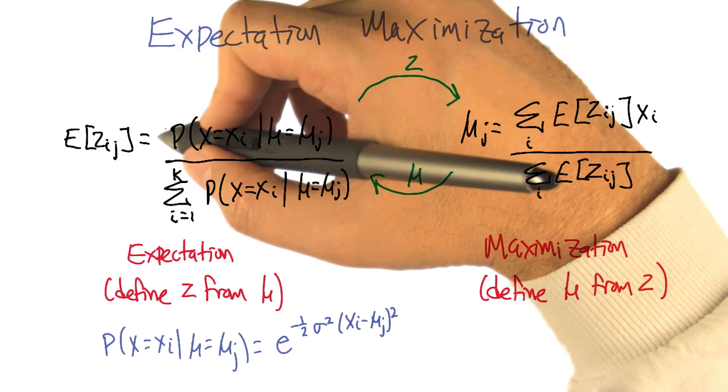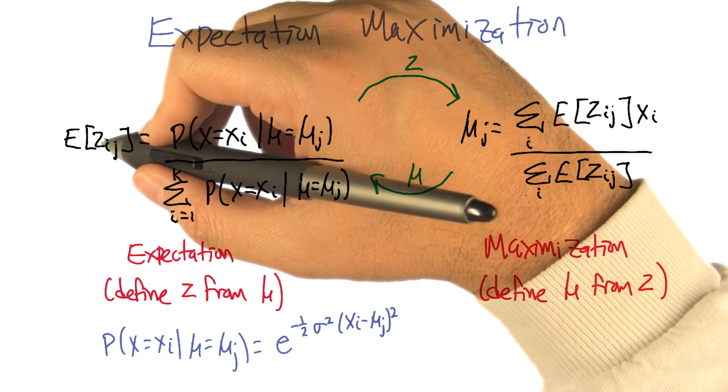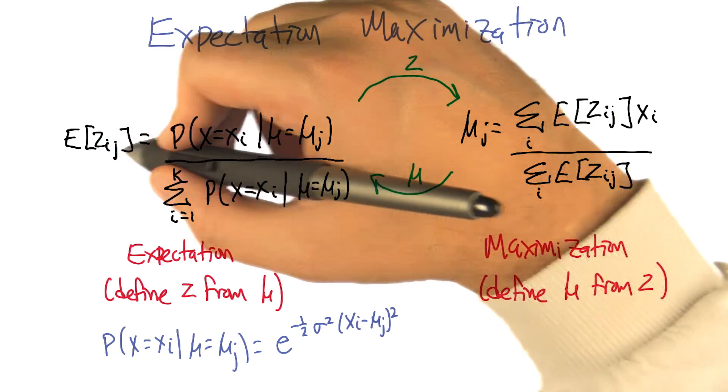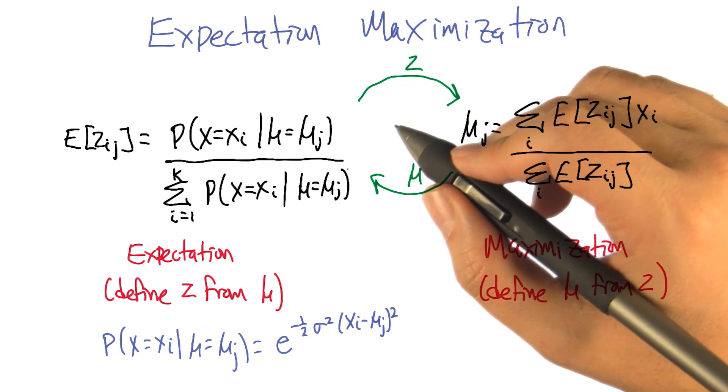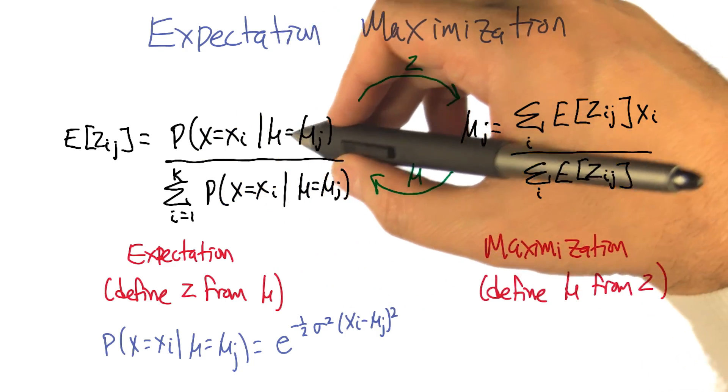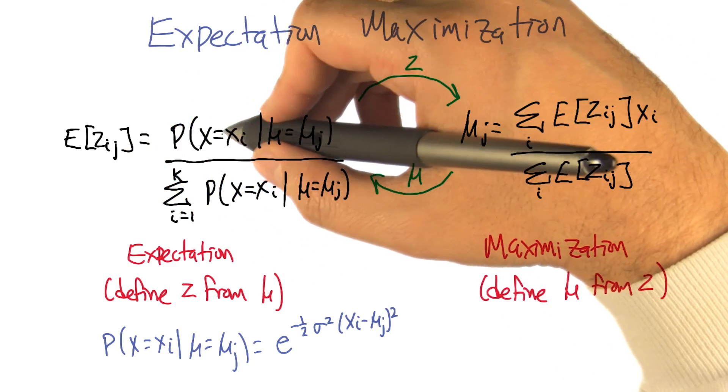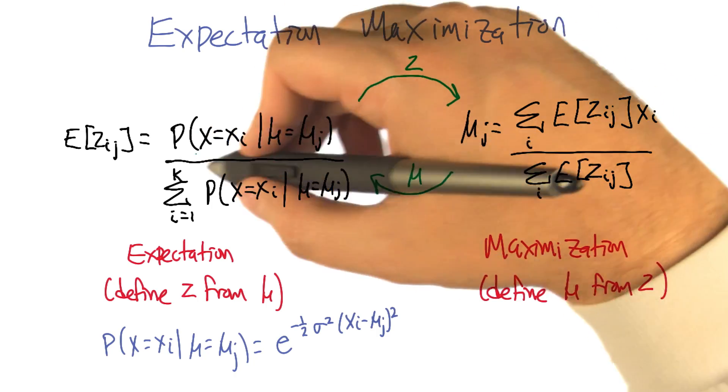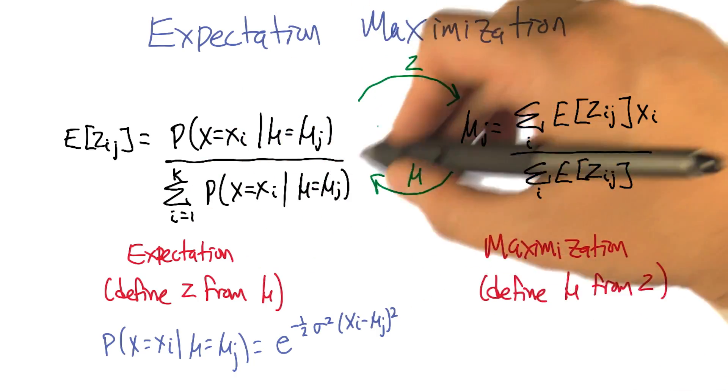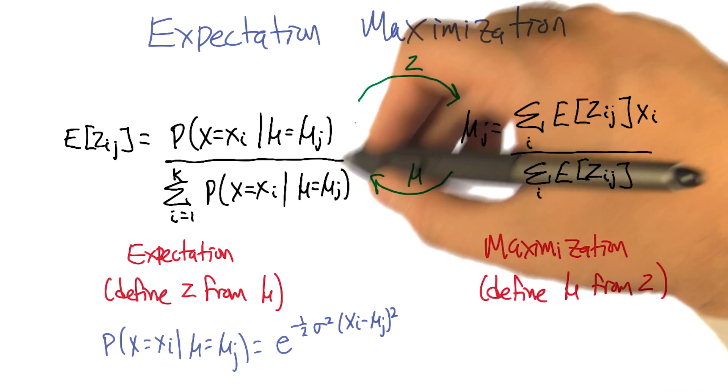This probabilistic indicator variable Zij represents the likelihood that data element i comes from cluster j. The way we're going to do that, since we're in the maximum likelihood setting, is to use Bayes' rule. That's going to be proportional to the probability that data element i was produced by cluster j, and then we have a normalization factor. Normally, we'd also have the prior in there. So why is the prior gone?